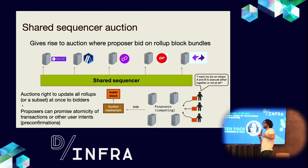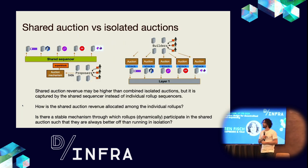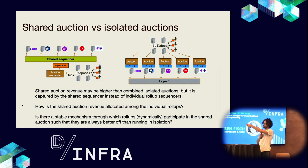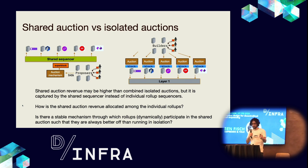Proposers who win the right to do this can promise atomicity of transactions or other user intents — these are called pre-confirmations. For example, a user may say: I want my transactions on rollups A and B to execute either together or not at all. That can be satisfied by a proposer who wins the auction to propose the next block of both rollups A and B together. In a shared auction, individual proposers can bid not only on individual rollup rights, but may bid even higher for the right to propose two rollup blocks together.